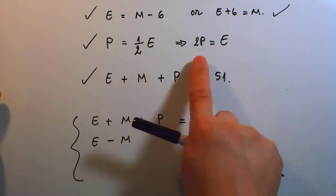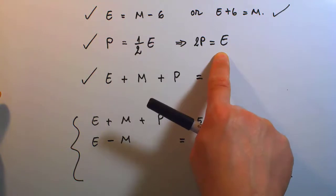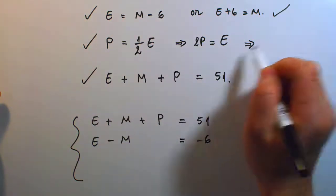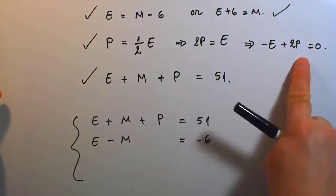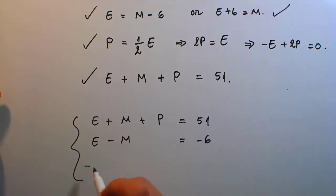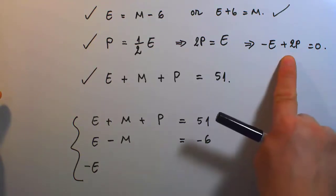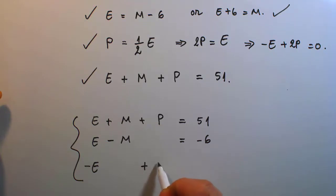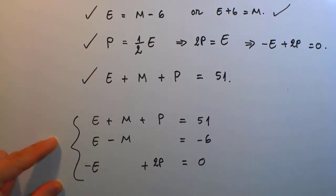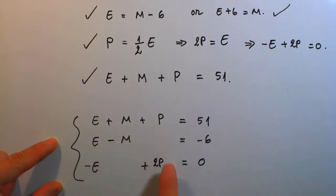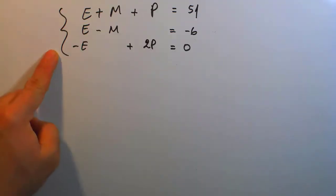For the third equation, using the convenient form two P equals E, we put all variables on the left-hand side, giving us negative E plus 2P equals 0. There is no M variable in this equation, so it reads negative E plus 0M plus 2P equals 0. This completes our successful setup of the system of linear equations, with each variable lined up in one column throughout the different equations.